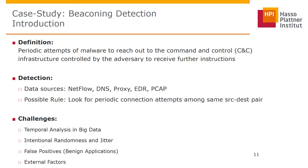One could create a rule that looks for periodic connection attempts between the same source-destination pair. However, it is not an easy challenge. It is not a simple rule you can define in a SIEM as a signature because it is a big data problem. You need to examine every source-destination pair and calculate time differences to assess periodicity. There is also jitter or randomness in beaconing, false positives from benign applications like software updates, and external factors such as an endpoint going offline overnight causing re-connections.